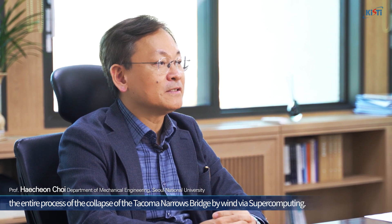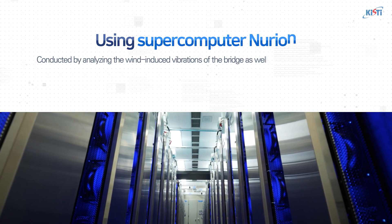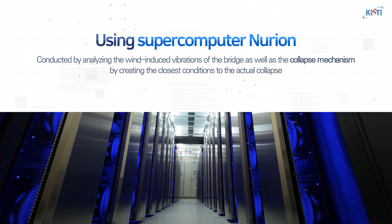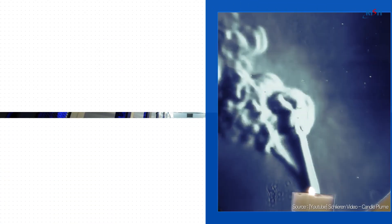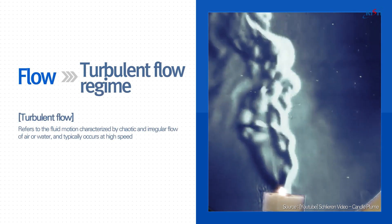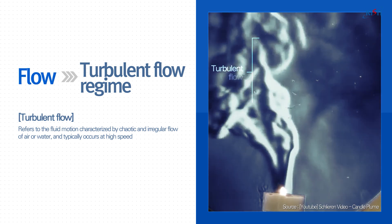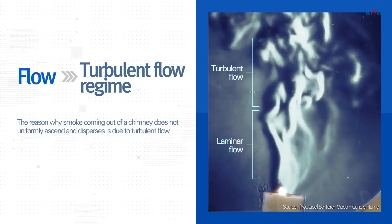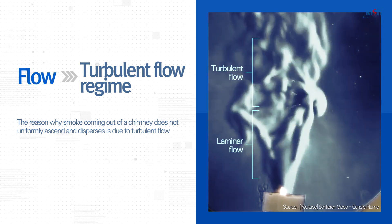The study was conducted by analyzing the vibrations of the bridge caused by wind, along with the collapse mechanism, by creating the closest conditions to the actual collapse using a supercomputer. The flow in such conditions falls under the turbulent flow regime. Turbulent flow refers to fluid motion characterized by chaotic and irregular flow of air or water, and it typically occurs at high speed. An easy example of turbulent flow would be the reason why smoke coming out of a chimney disperses instead of uniformly ascending.